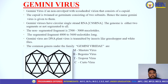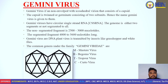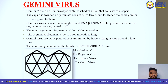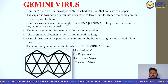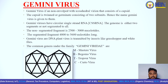The first is Gemini virus. Gemini virus is a non-enveloped with icosahedral variant that consists of a capsid. The capsid is twinned or geminate, consisting of two subunits — hence the name Gemini virus. Gemini viruses have circular single-stranded DNA.